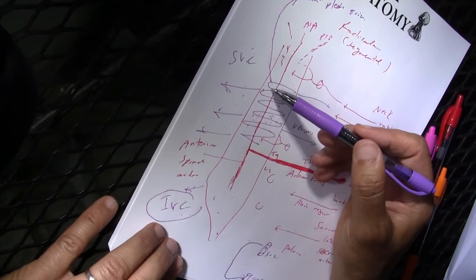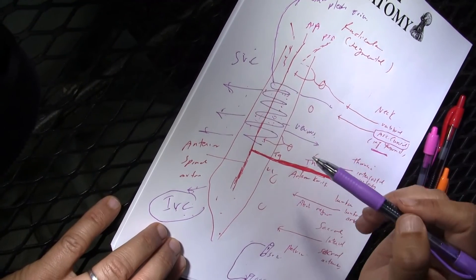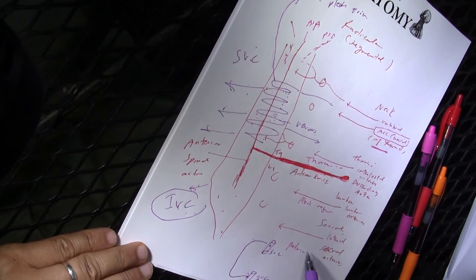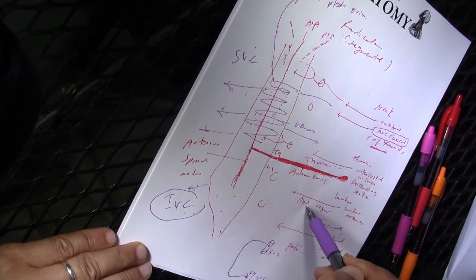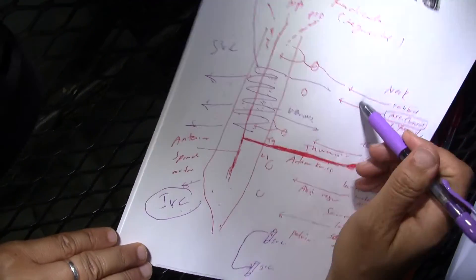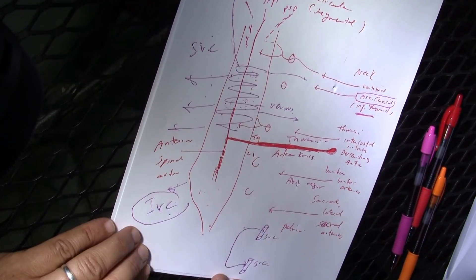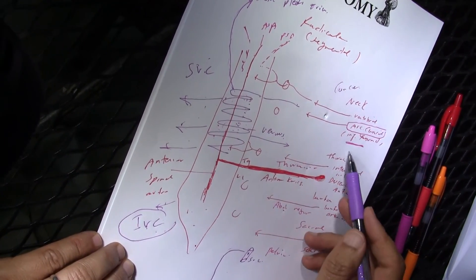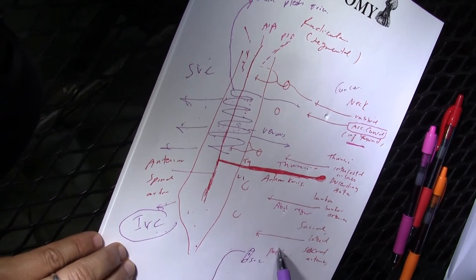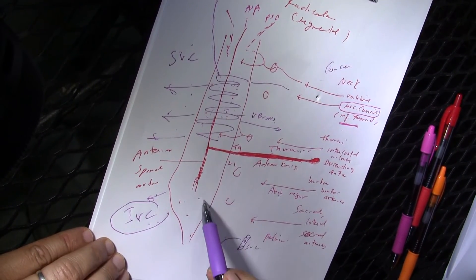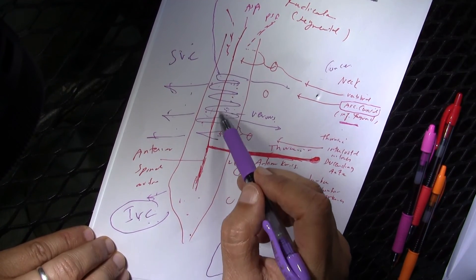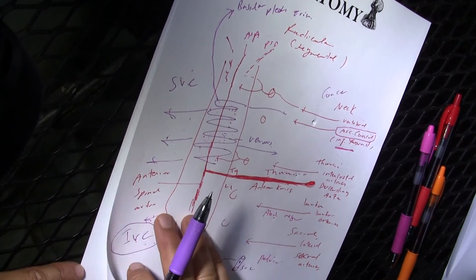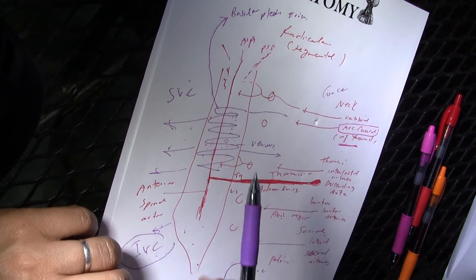However, there is also a clinical downside: this venous plexus can provide a route for metastasis of cancer from the pelvic, abdominal, thoracic, or neck regions to the cranial cavity and CNS. So if there is cancer in any of these regions, it is not surprising to see metastasis spread through these veins to the brain or cranial cavity. Keep this in mind.